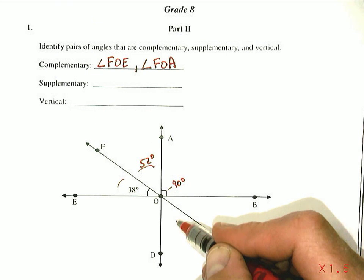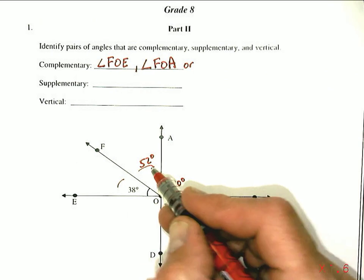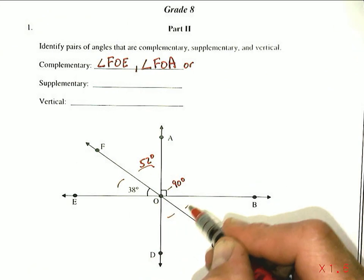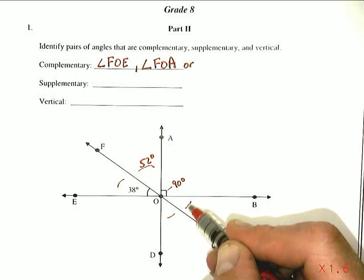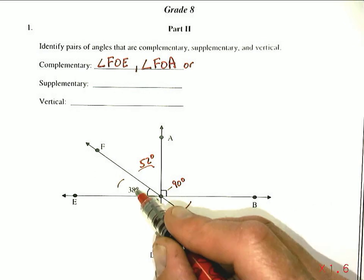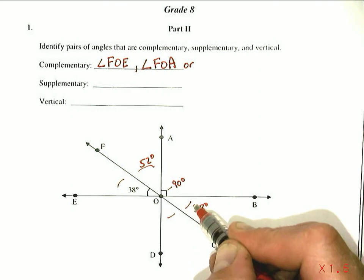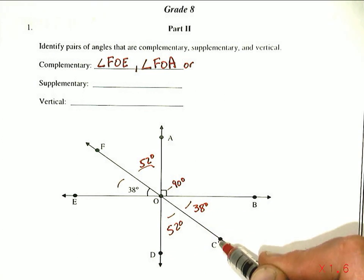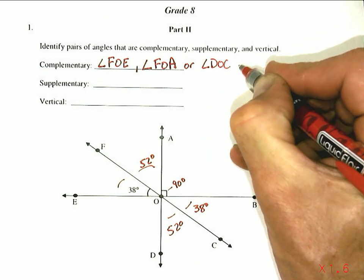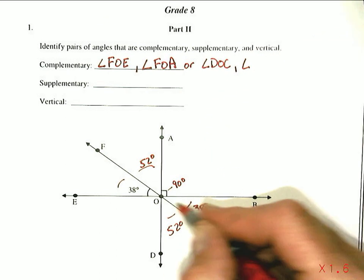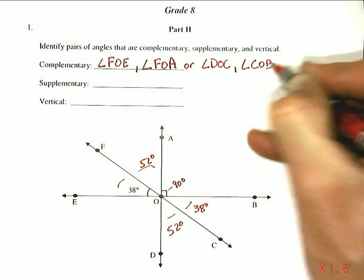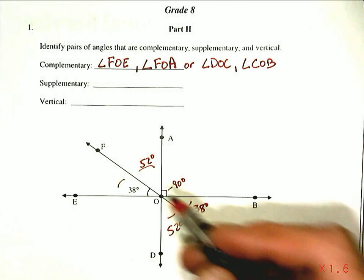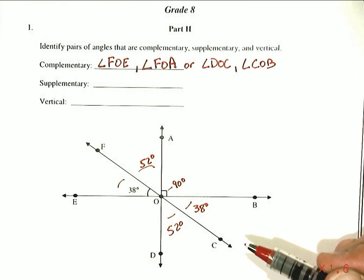There is another pair of complementary angles — these two right here. I could have listed either pair. These two angles are also complementary because together they would also add up to 90 degrees. That's partly because these two angles are vertical angles — they're opposite each other and the same size — and so are these two at 52 degrees. So angle DOC and angle EOB are also complementary angles in this set.